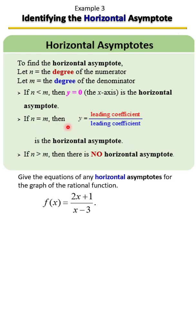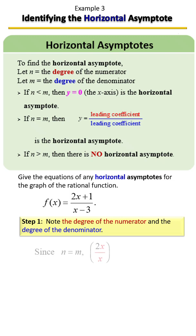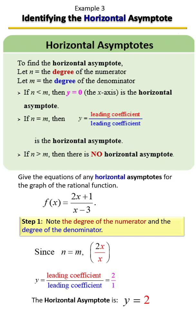...then you will divide their leading coefficients. So the leading coefficient of the top is 2, the leading coefficient of the bottom is 1. 2 divided by 1 is going to give you 2, so your horizontal asymptote is y equals 2.